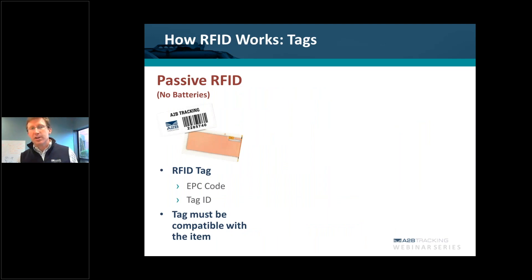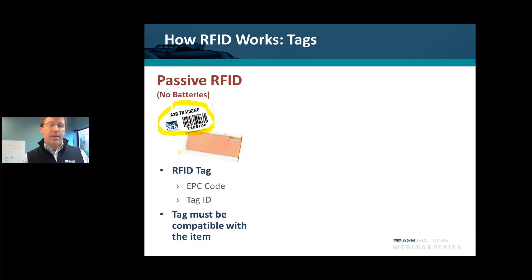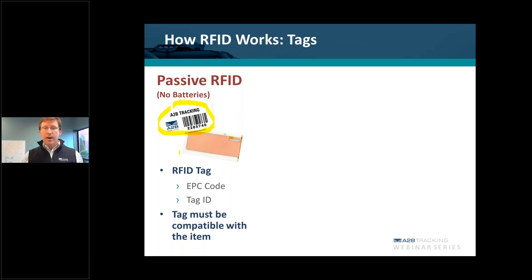Let's get into how this works and RFID technology basics. What you see here on the screen is a passive RFID tag. What makes it passive is the fact that it doesn't require a battery source for the chip in the tag to be interrogated — meaning read by another reader using radio frequency signals.